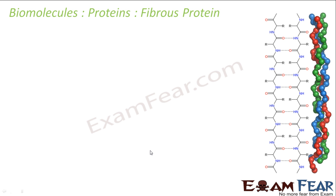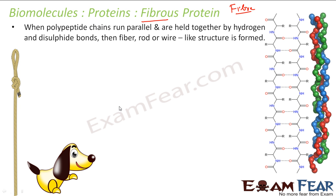What are fibrous proteins? As the name suggests, fibrous means the shape is like a fiber — this word came from fiber. When the polypeptide chain runs parallel and they are held together by hydrogen bonds and disulfide bonds, then a fiber or rod-like structure is formed. This is called fibrous protein, also called scleroprotein.